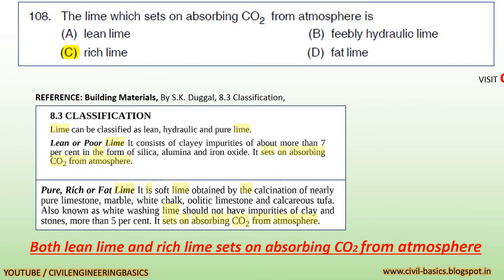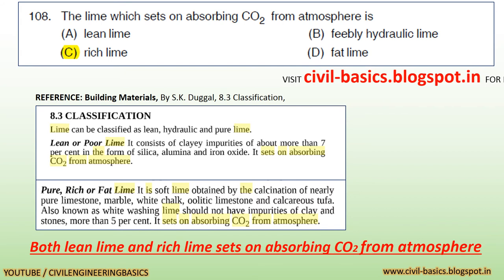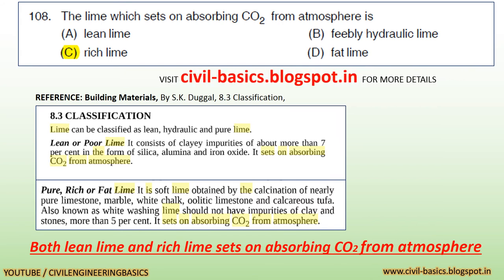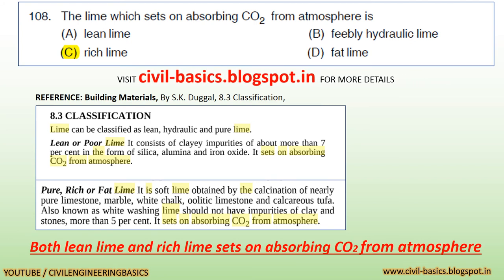Question: The lime which sets on absorbing CO₂ from the atmosphere is: a) lean lime, b) feebly hydraulic lime, c) rich lime, d) fat lime. By reference Building Materials by S.K. Dougal, Section 8.3 Classification: lean or poor lime sets on absorbing carbon dioxide from the atmosphere, and also rich or pure lime sets on absorbing carbon dioxide from the atmosphere. So both lean lime and rich lime set on absorbing CO₂ from the atmosphere.